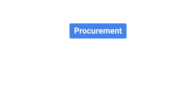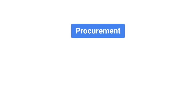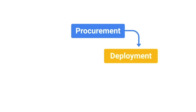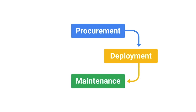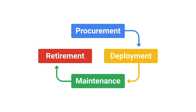There are four main stages of the hardware lifecycle. Procurement — this is the stage where hardware is purchased or reused for an employee. Deployment — this is where hardware is set up so that the employee can do their job. Maintenance — this is the stage where software is updated and hardware issues are fixed if and when they occur. Retirement — in this final stage, hardware becomes unusable or no longer needed, and it needs to be properly removed from the fleet.